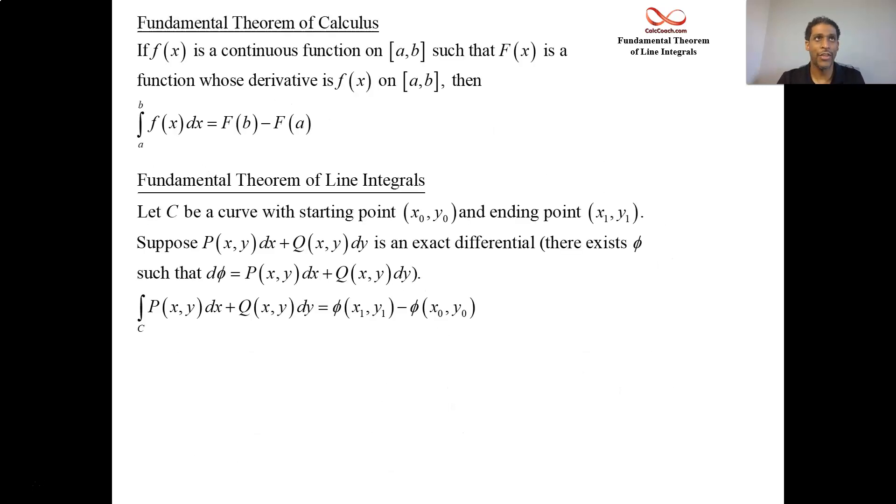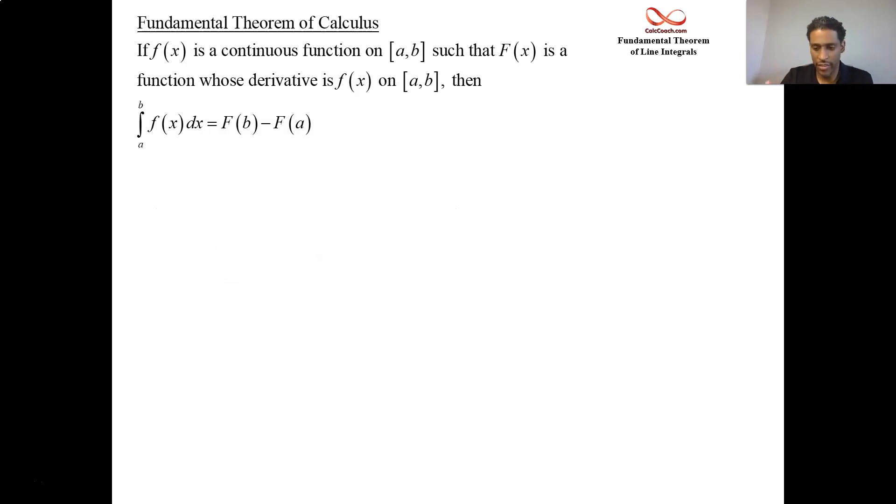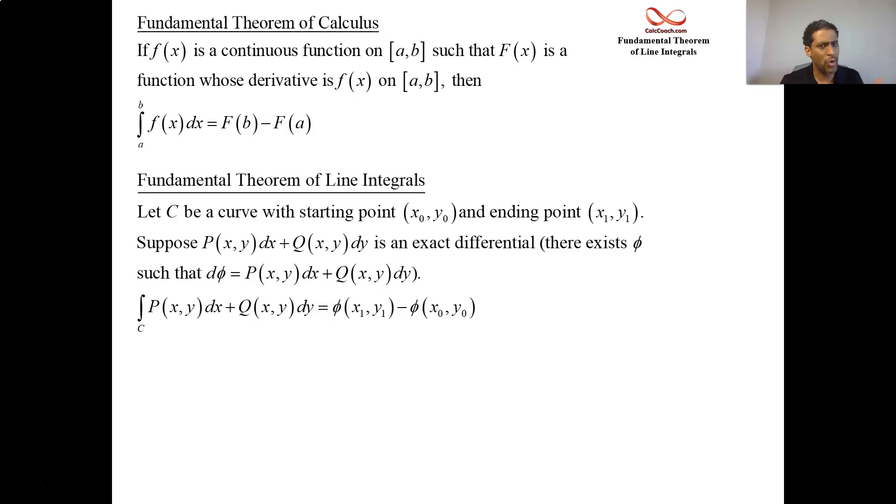So the fundamental theorem of calculus says that if you go find out who that anti-derivative is, you can just plug in the bounds. Plug in the upper limit, then subtract from that what you get by plugging in the lower limit. The fundamental theorem of line integrals is going to be the same thing. If you go out and find out what that potential function is, phi, then you can plug in the ending point and subtract what you get from plugging in the starting point. You need it to be true that the inside is an exact differential, that f is conservative, that the line integral is independent of path. But when it's the case, you can just evaluate phi, and that would be the same value as the integral.